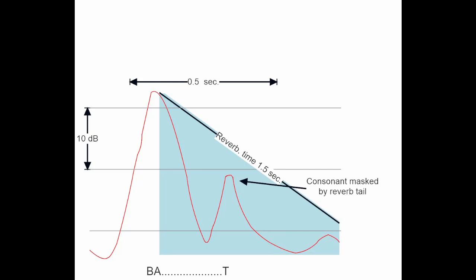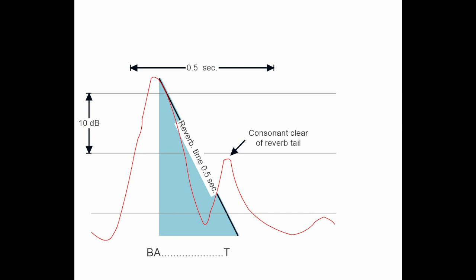Now I'm going to say them again with a one-and-a-half-second reverberation time, which is pretty typical in a residence that doesn't have acoustic treatment: bat, bad, back, bass, ban, bath. So let's talk about what's going on. The word 'bat' starts out loud but the 't' is softer, and with a reverberation time of one and a half seconds the room just covers it — that consonant is gone because of the reverberation tail. When we get the room under control, the 't' is revealed, the consonant is unveiled, and articulation is now obtainable.